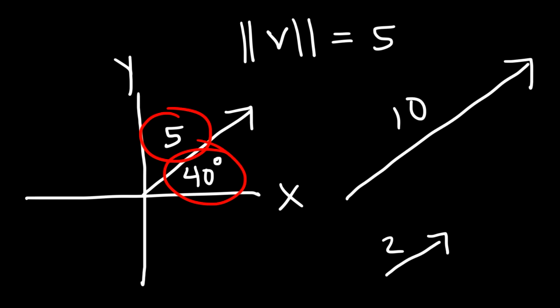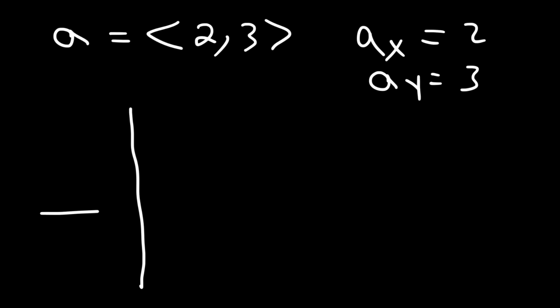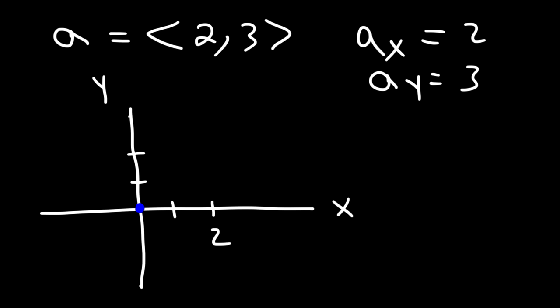Another way to describe a vector is using components. Let's say we have vector A with components 2 and 3. The x-component, A sub x, is 2, and the y-component is 3. Represented graphically, starting from the origin, we travel 2 units to the right and 3 units up. The x-component is 2 units along the x-axis, and the y-component is 3 units parallel to the y-axis, giving us vector A.